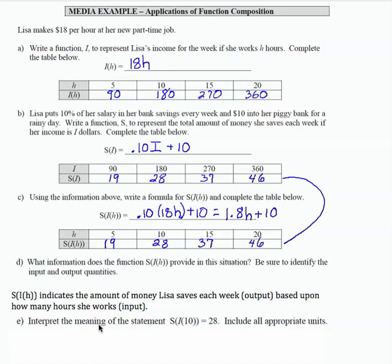If I'm asked to interpret the meaning of this statement, S of I of 10 equals 28, well the hours is 10. So if she works 10 hours in a given week, she is going to save $28. We can write that out. If Lisa works 10 hours in a given week, that's the input, she's able to save $28.